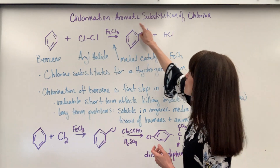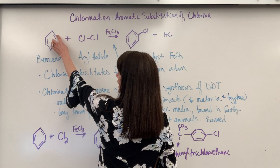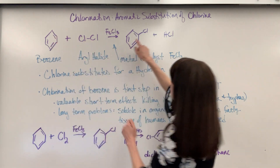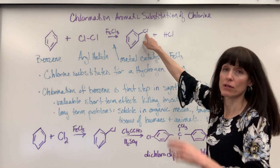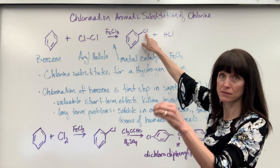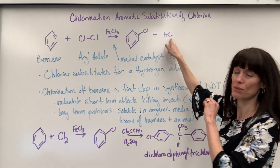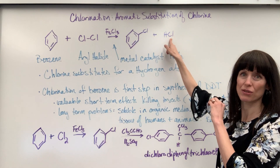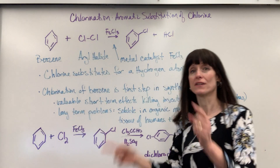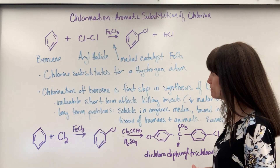Now this chlorobenzene — notice what happened. It's understood there's a hydrogen here. The hydrogen and the chlorine switch, so you have a chlorine now attached to that aromatic ring, attached to the benzene, and the hydrogen is what's attached to the chlorine. So it's a hydrogen and a chlorine that are substituted — the chlorine substitutes a hydrogen.